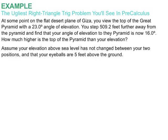And this is the basis of our one example for this video. And I simply call it the ugliest right triangle trig problem that you'll see in pre-calculus. At some point on the flat desert plain of Giza, you view the top of that Great Pyramid with a 23.0 degree angle of elevation. Then you step 509.2 feet back, further away from the pyramid, and you find that your angle of elevation is now 16.0 degrees. We're going to assume for the sake of this problem that our elevation does not change. And we're also going to assume that our eyeballs are five feet above ground.